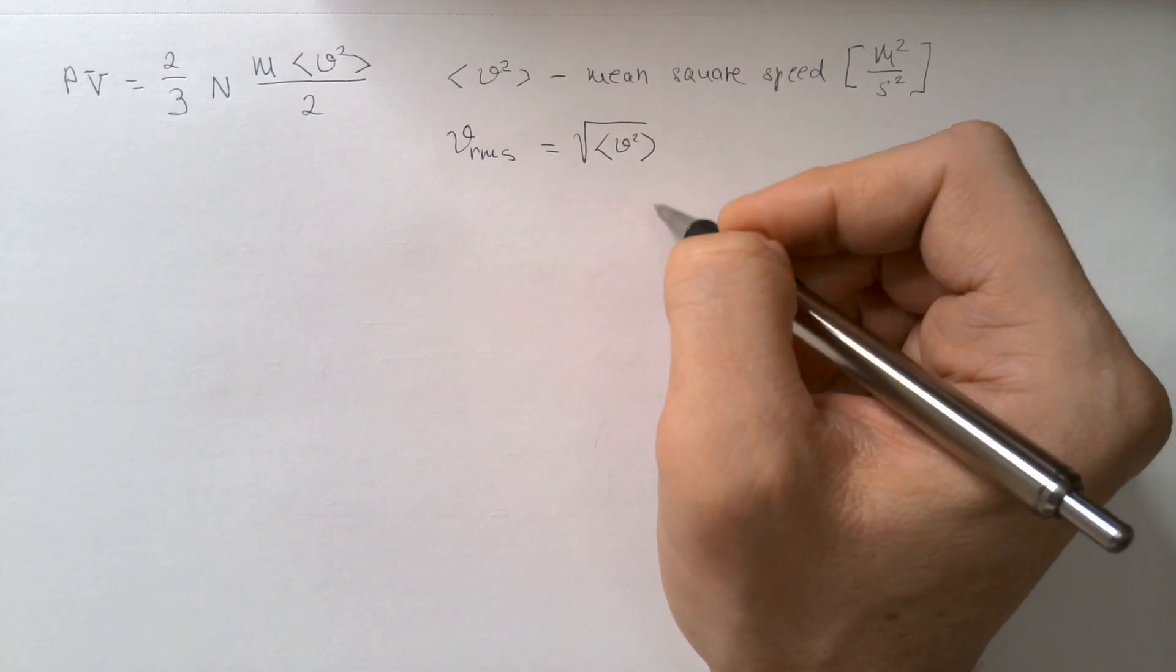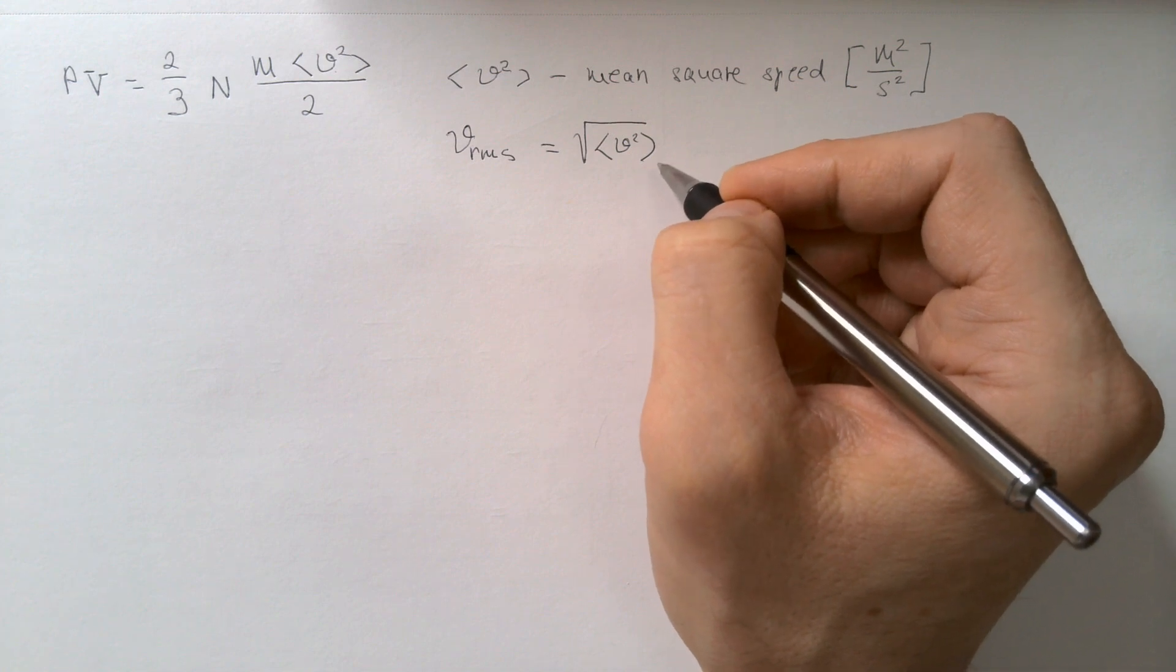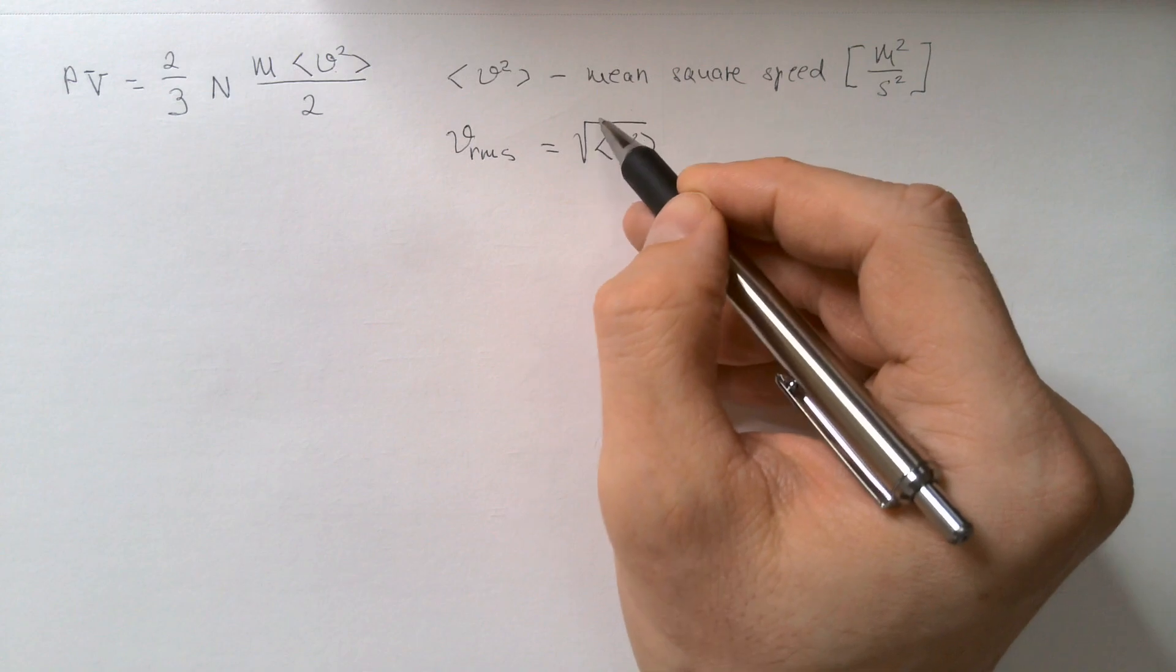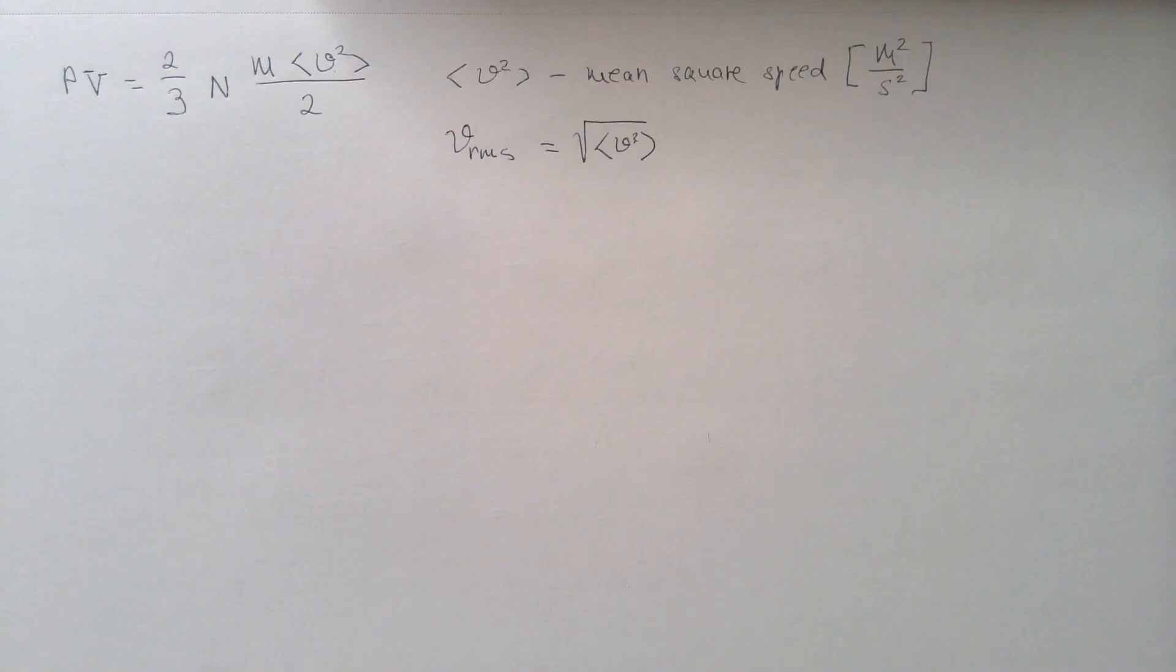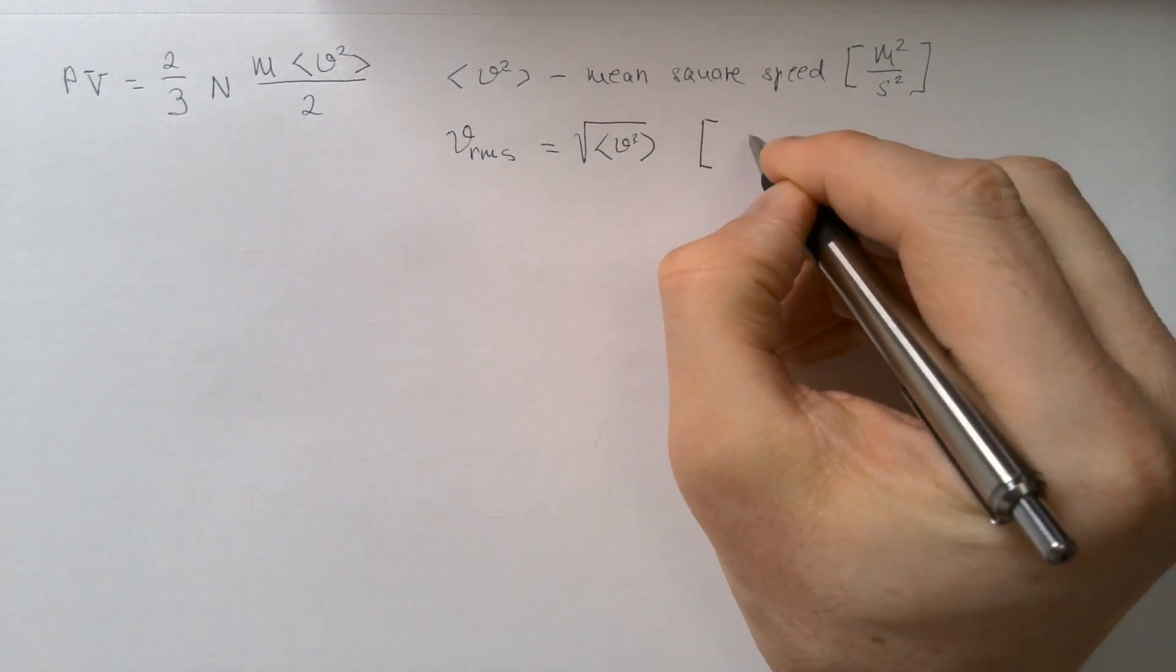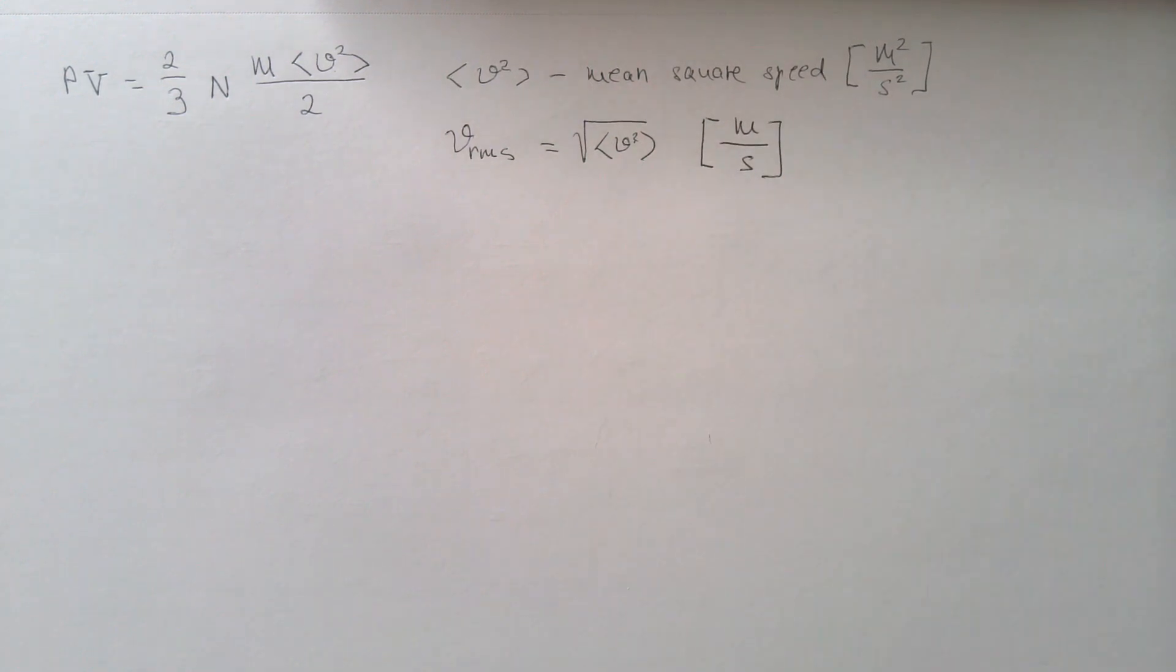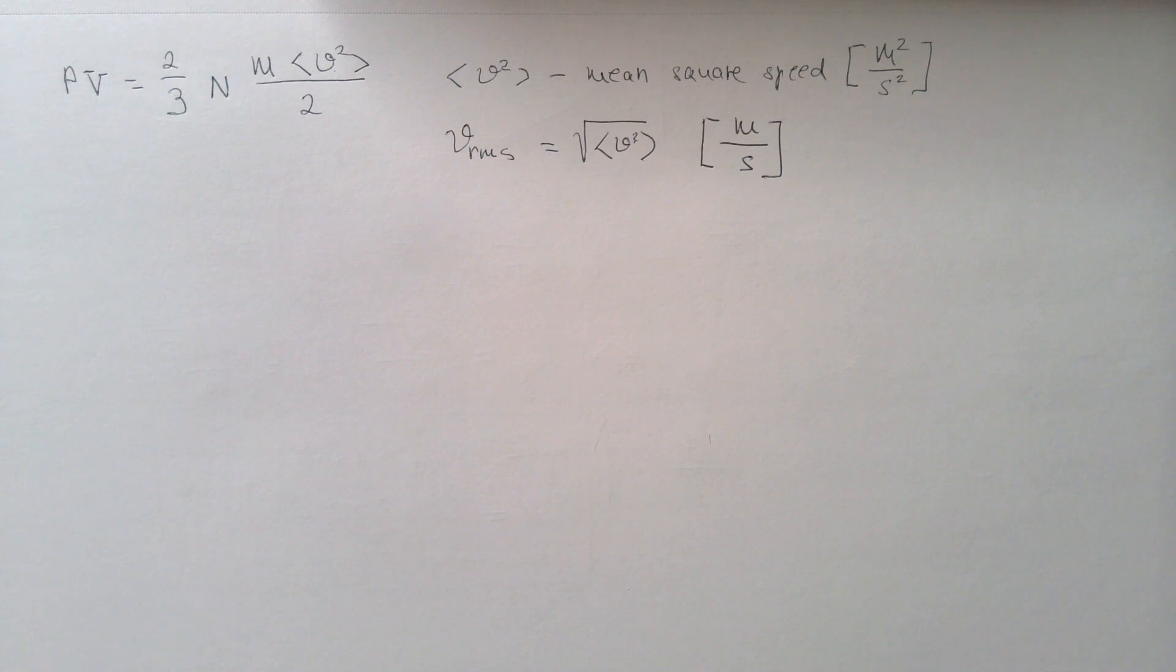Now you have to know that in these statistical averaging operations, you cannot now just take this square and cancel with this root and say this is correct. Because every time you do something like that, a small unicorn dies. This has units of meters per second, and therefore, it's appropriate to call it speed.